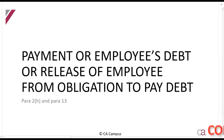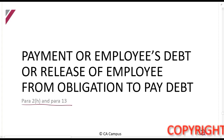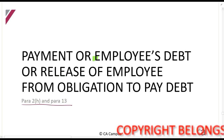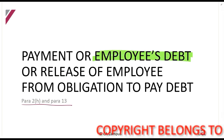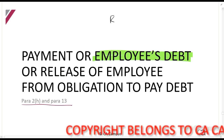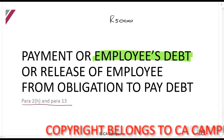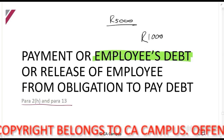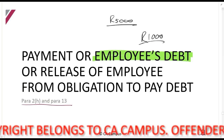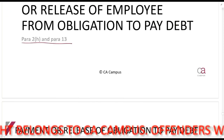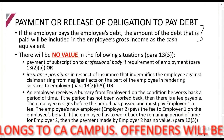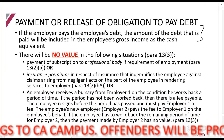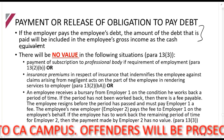Our next fringe benefit is in paragraph 2h and paragraph 13 of the 7th Schedule, and this is a situation where the employer pays the employee's debt. So you owe a clothing retailer, let's say Edgars, 5,000 rands on your account and your employer pays that. Or you owe 1,000 rands on your cell phone account and your employer pays it. Basically, the amount the employer pays is the amount included as the cash equivalent. It's as simple as that.